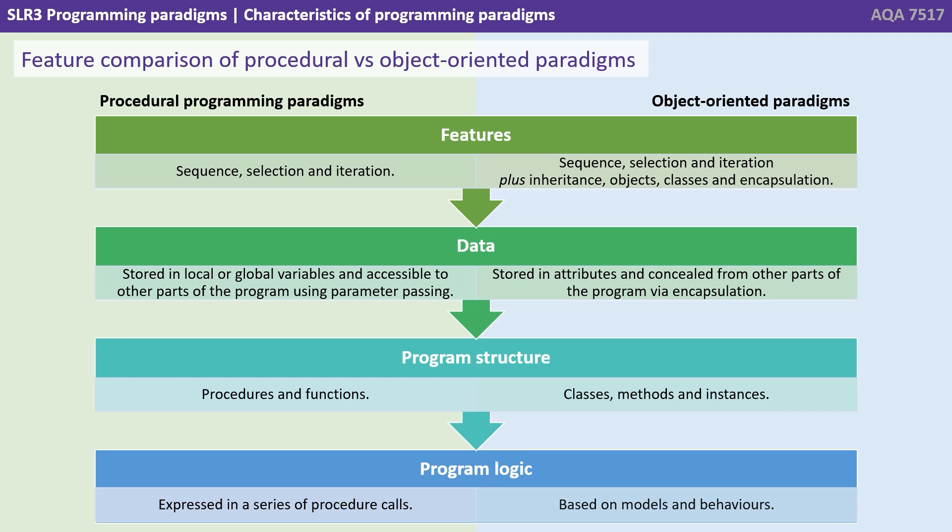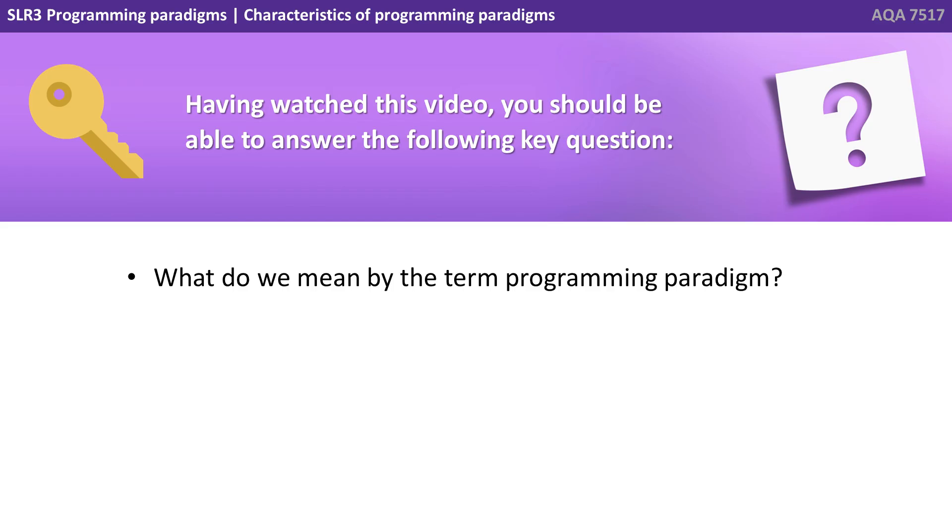In procedural programming our main programming structures are procedures and functions. In object orientation they're classes, methods and instances. The program logic in procedural programming is expressed in a series of procedure calls. In object orientation it's based on models and behaviour. We'll be looking at the object orientated programming paradigm in a lot more detail in the videos in the rest of this section. Having watched this video you should be able to answer the following key question: what do we mean by the term programming paradigm?